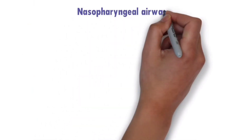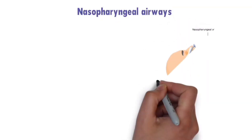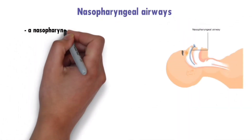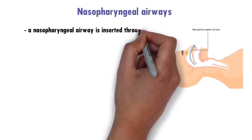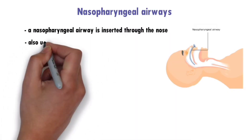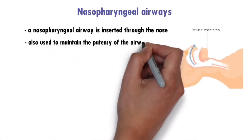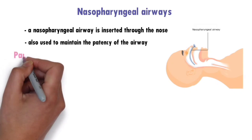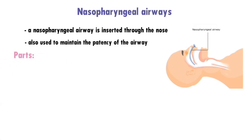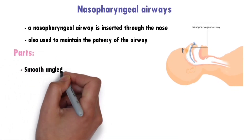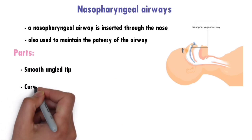Next, we'll see about the nasopharyngeal airways. As the name suggests, a nasopharyngeal airway is inserted through the nose. As discussed, the mechanism of obstruction is the same and this airway is also used to maintain the patency of the airway. Parts of nasopharyngeal airways include a smooth angled tip, a curved body, and a flanged end.